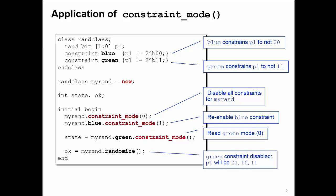And now when I randomize the handle myrand, the green constraint is disabled. So I'm randomizing without the green constraint. The permissible values for P1 are 1, 2, or 3.